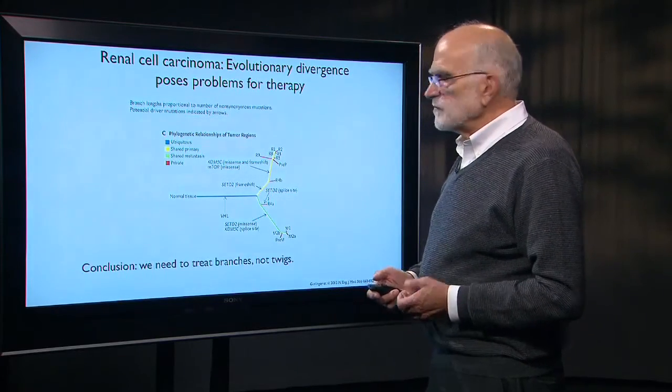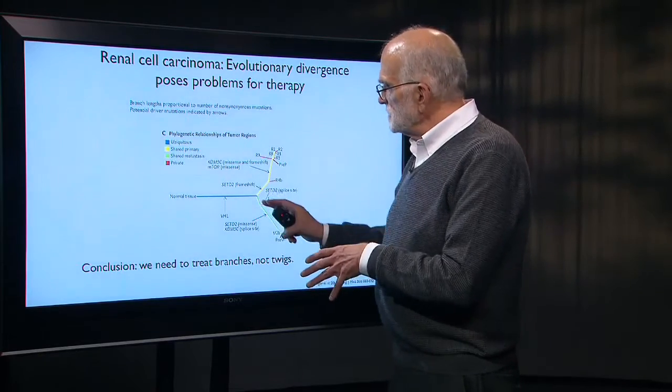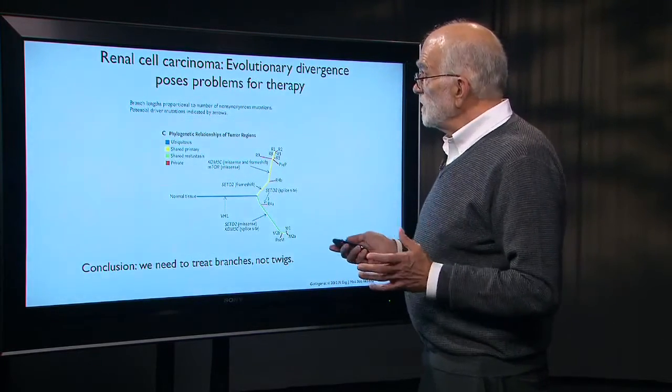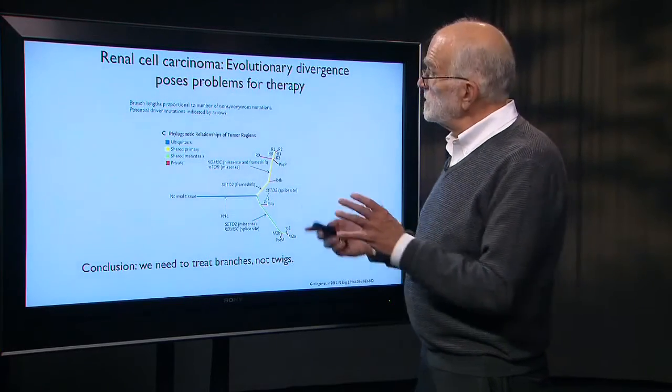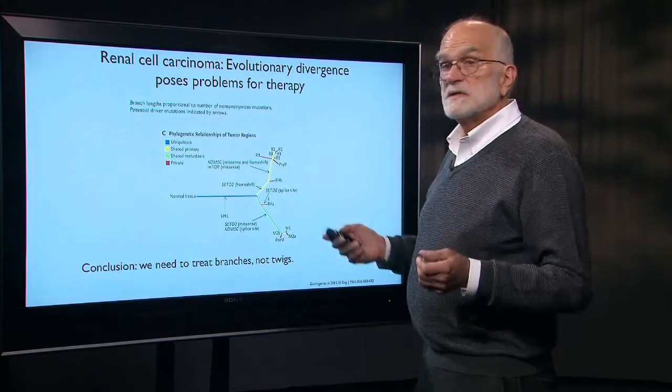The take home from this is that we may need to treat the branches, not the twigs. And in any event, we need to have this level of detail to try to figure out what is going to cause resistance to chemotherapy in a metastasizing cancer.